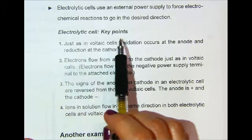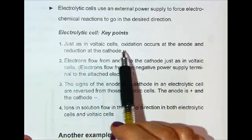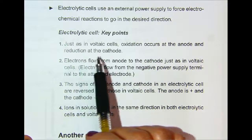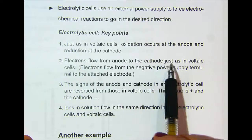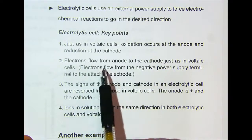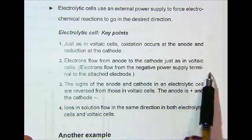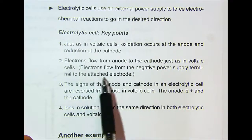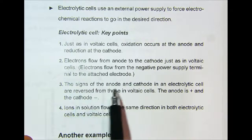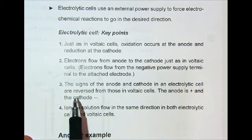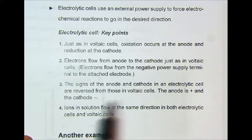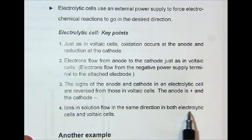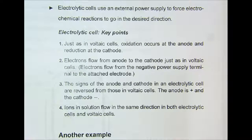Electrolytic cell key points: Just as in voltaic cells, oxidation occurs at the anode and reduction at the cathode. Electrons flow from anode to cathode, just as in a voltaic cell. Electrons flow from the negative power supply terminal into the attached electrode. The signs of the anode and cathode in an electrolytic cell are reversed from those in voltaic cells — the anode is positive and the cathode is negative. Ions in solution flow in the same direction in both electrolytic and voltaic cells.